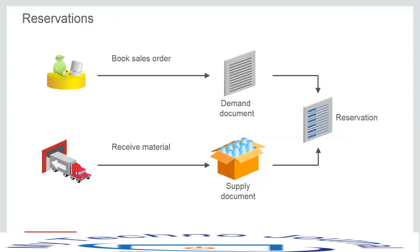There are two types of reservations: high-level reservations and low-level reservations. High-level reservations contain information about the item and the organization, while low-level reservations contain more detailed information such as revision, lot, sub-inventory, serial number, and locator. We can use the manage reservations user interface to create, view, update, transfer, and delete reservations.